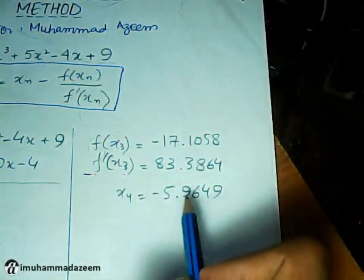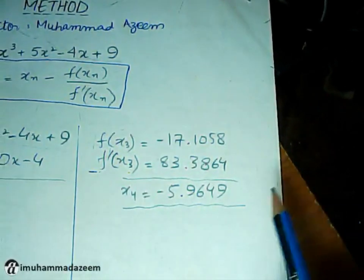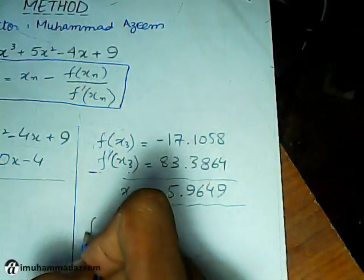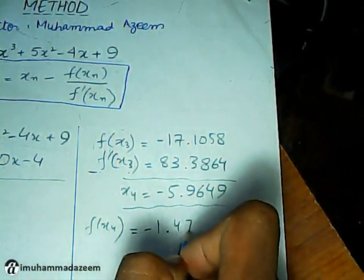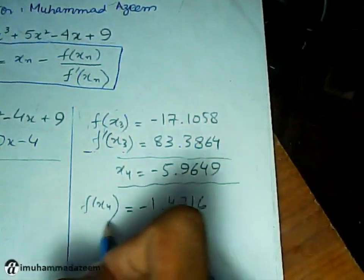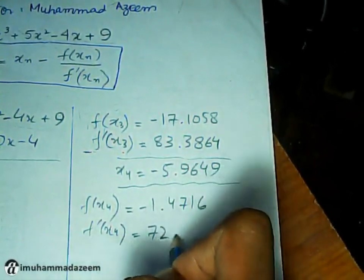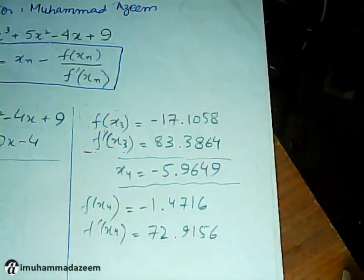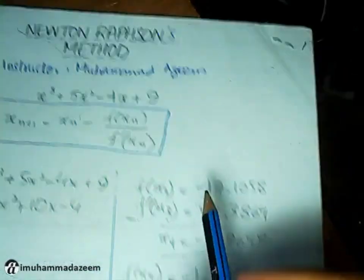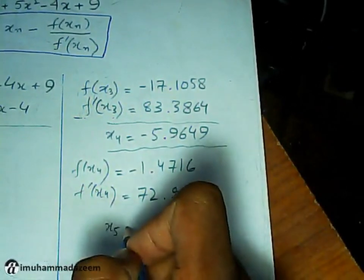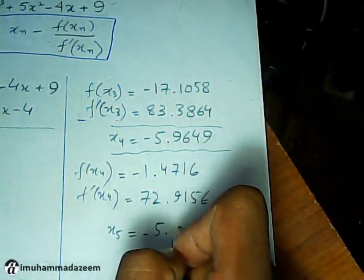We cannot say at this point that this answer is correct or not, or this has converged or not. We have to find the next values. f(X₄) is going to be minus 1.4716. The f prime of the same value equals 72.9156. So X₅ comes out to be minus 5.93075.